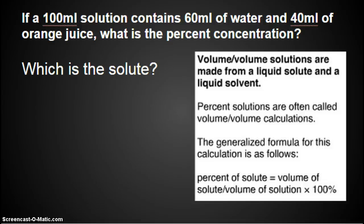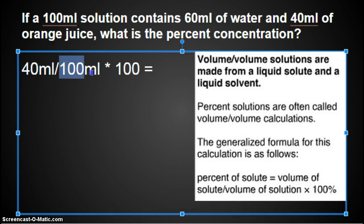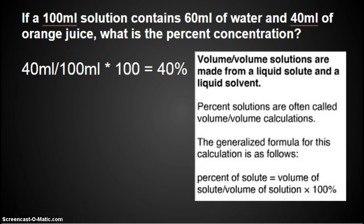If a 100 milliliters solution contains 60 milliliters of water and 40 milliliters of orange juice, what is the percent concentration? First of all, which one is the solute? The solute would be the orange juice. And how much do you have? You have 40 milliliters of orange juice divided by the total. The total is 100, times it by 100 to get our percent. Now again, we're going to use a formula. Our formula this time is percent of solute equals volume of the solute divided by volume of the solution times 100%. So instead of mass, we're doing volume. And your answer is 40%.